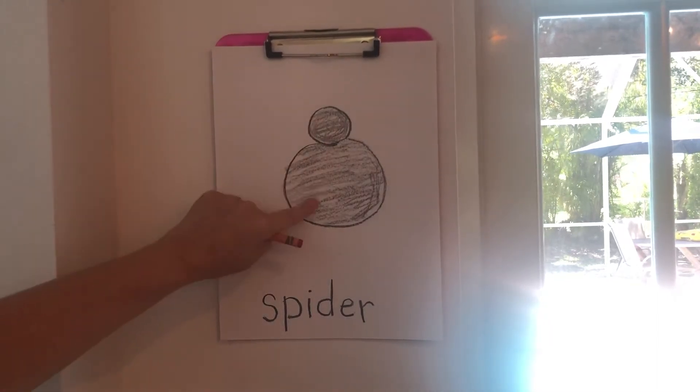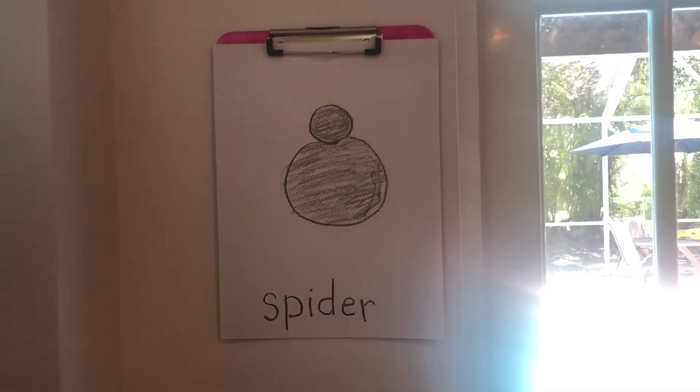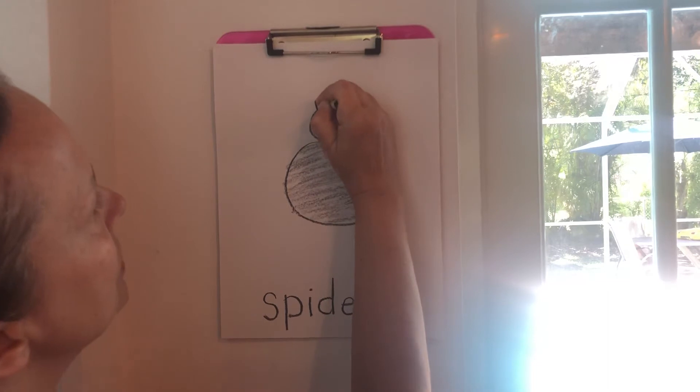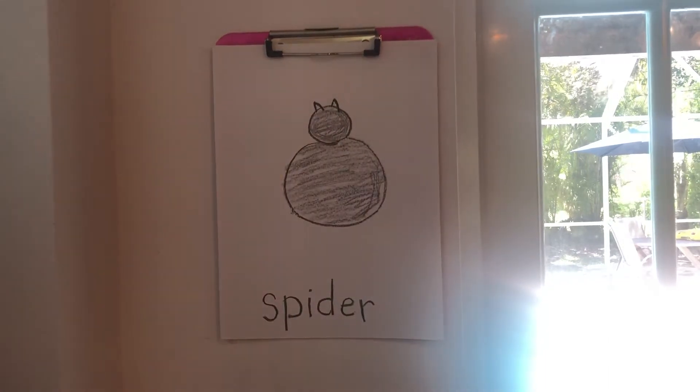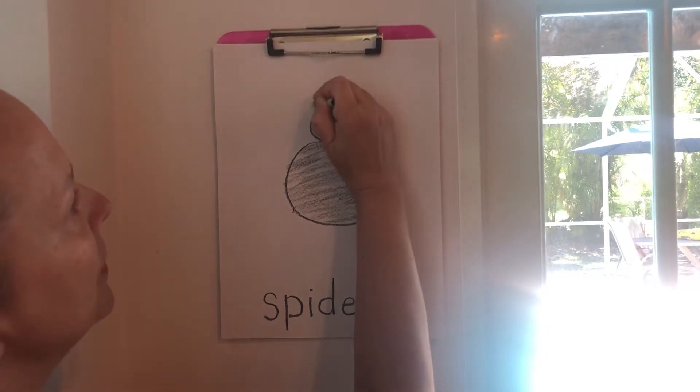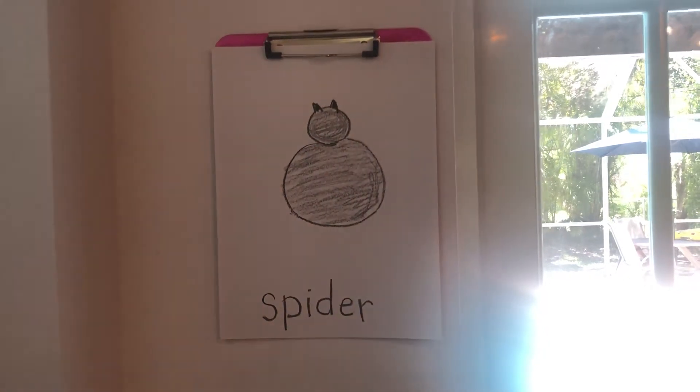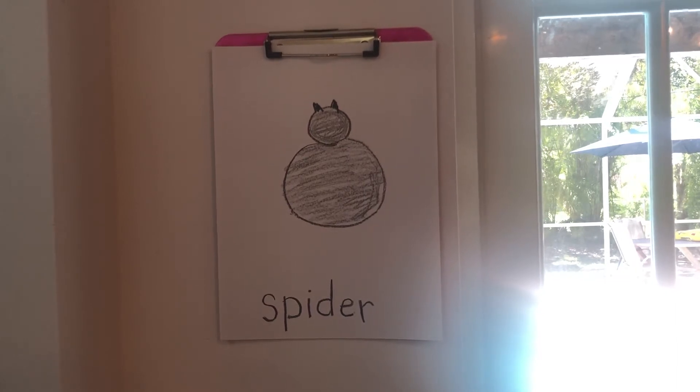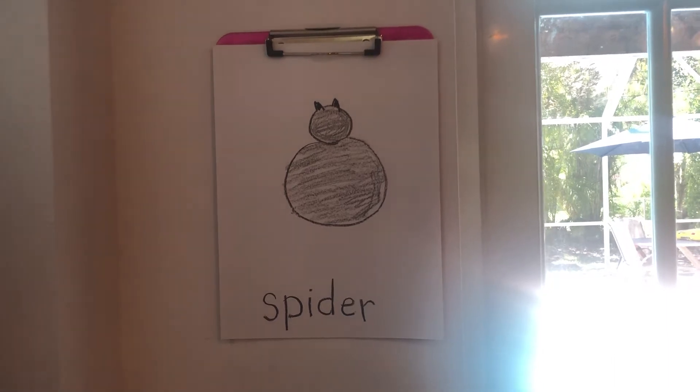And now what we're gonna do is we're gonna take two triangles and color them in on the top of the small circle, and we're gonna color them in darker. So now it doesn't look like a spider yet, right? But we're gonna make it look like a spider.